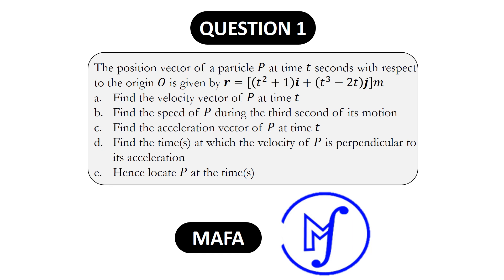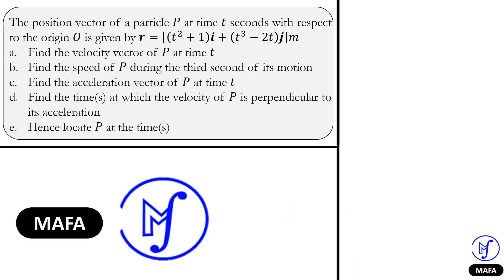This question is on kinematics of particles, and I want you to pay keen attention to the solution. We are going to solve every part and see the concepts being tested. Let's begin with the very first part, which asks us to find the velocity vector of the particle at time t seconds.